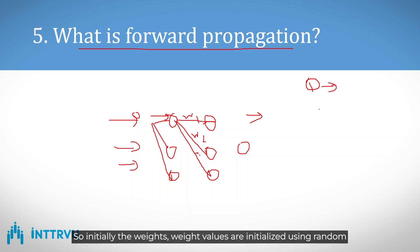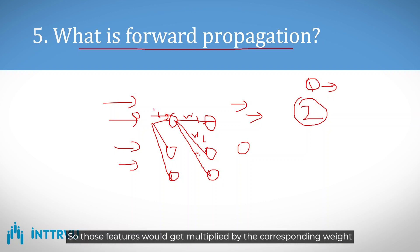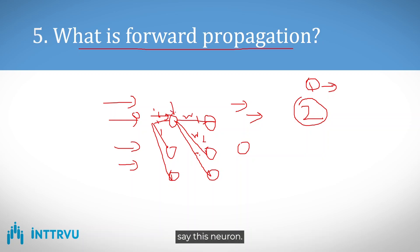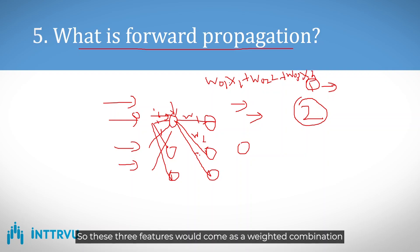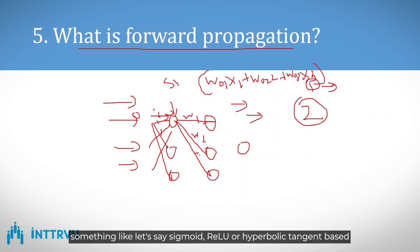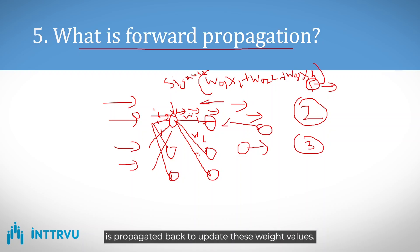The second step is forward propagation, where data is sent from input toward the output. For example, features are multiplied by corresponding weight values — say w01·x1 + w02·x2 + w03·x3 — and this weighted combination arrives at a neuron. The neuron then applies an activation function such as sigmoid, ReLU, or hyperbolic tangent, and that output passes forward until the final output is produced. In back propagation, the loss is calculated and propagated back to update weights.